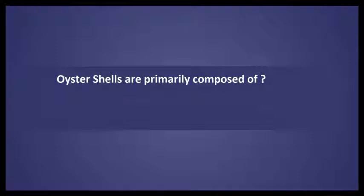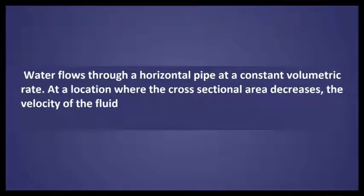The oyster shells are primarily composed of. The answer is calcium carbonate. Water flows through a horizontal pipe at a constant volumetric rate.